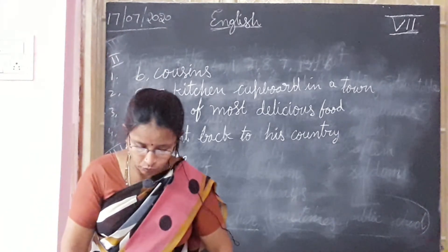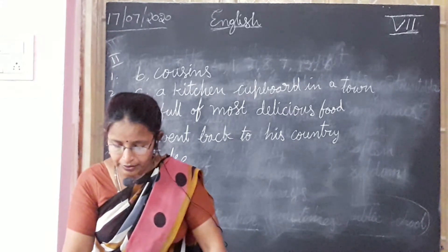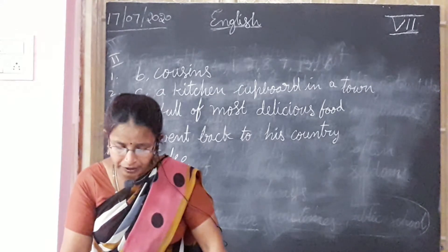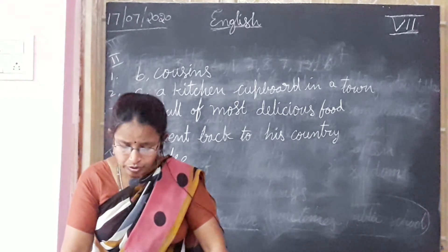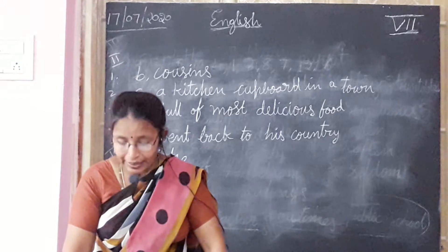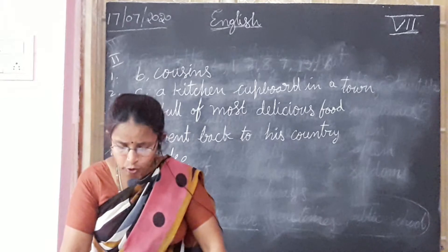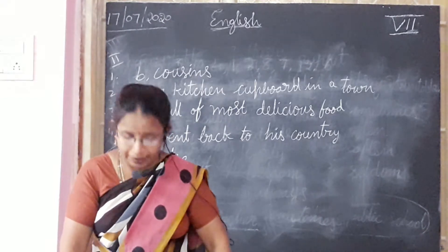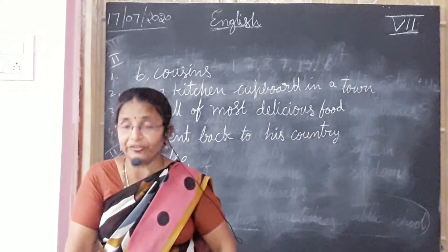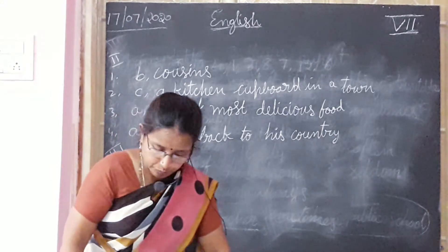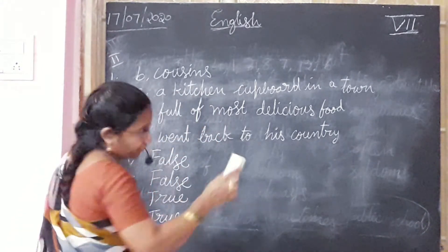Now come to page number 7, vocabulary section. Read the following sentences from your lesson carefully and tick the correct meaning of the underlined word in each sentence. Write the correct meaning of the underlined word. First: countryside — 'He has asked me to spend a week in the countryside.' Countryside means a land outside towns and cities with fields and woods. The option is C — a land with fields and woods.